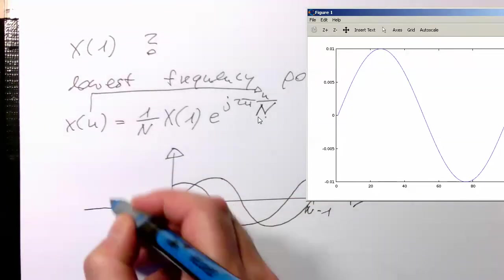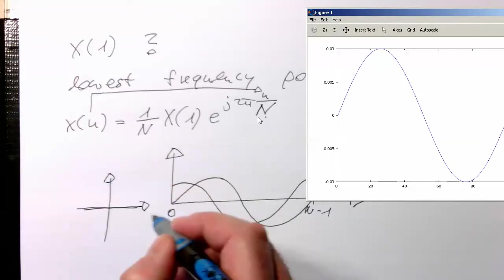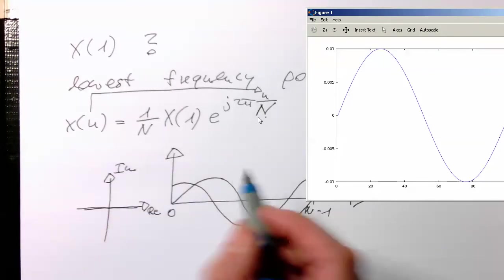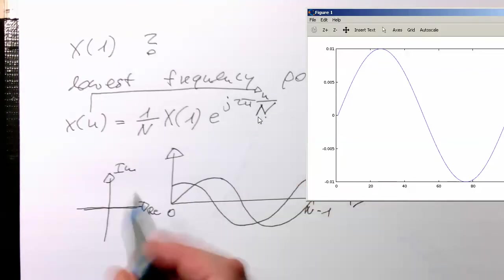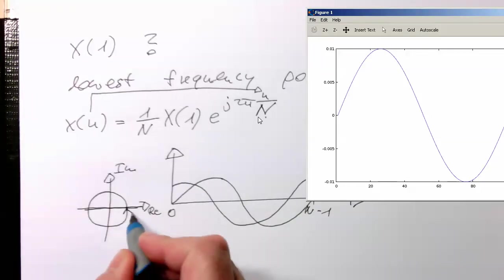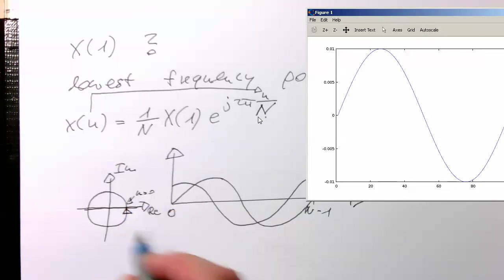We could also draw here this at the side here. This is our complex diagram here imaginary. And so, this term here 2π n divided by N. This rotates exactly one time around here. It starts here from n equals zero. And then when it's here, it's at n equals n minus one. So, that's the idea behind that.